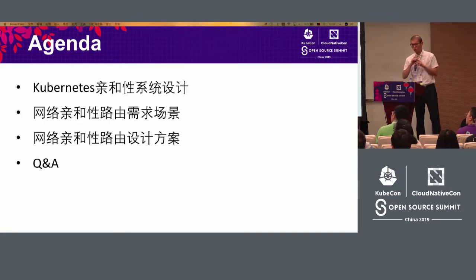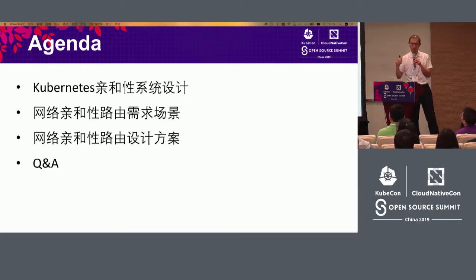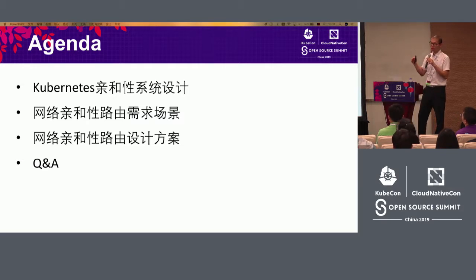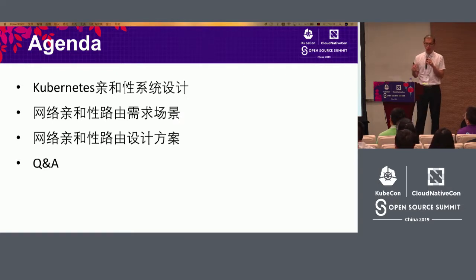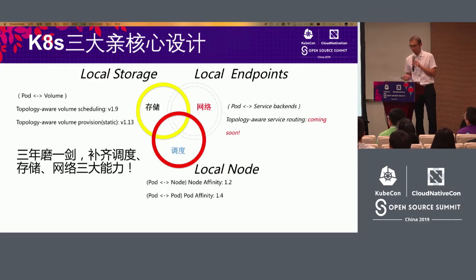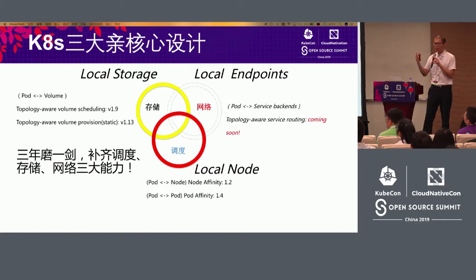We will begin our session today mainly from four aspects: the design of the whole compatibility system and the compatibility of the network, why we are doing that, the specific needs, as well as the actual design and demand for Kubernetes.